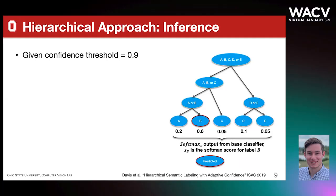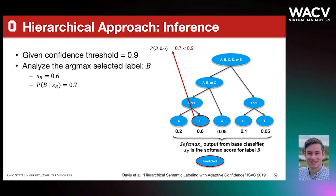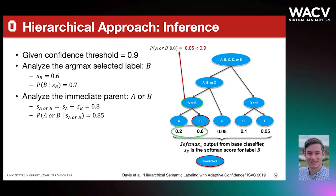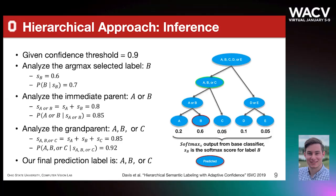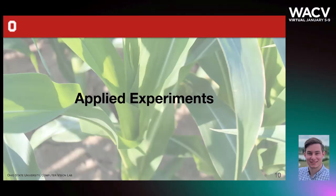Next is the inference procedure. Given a confidence threshold of 0.9, we begin with the argmax-selected label from a pre-trained base classifier. We first analyze the posterior of this label given its softmax score. Since it is deemed unconfident, the label is generalized upwards and its immediate parent is examined. Since it is still unconfident, the label gets generalized again to the grandparent of B. Once a sufficiently confident label is found, that becomes the output label for the given test input. Now we will talk about our datasets, hierarchies, and results using this hierarchical approach.